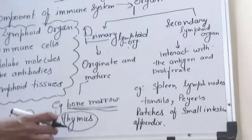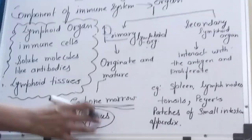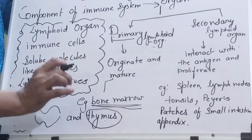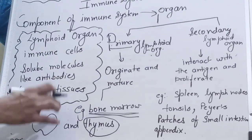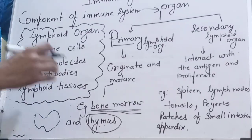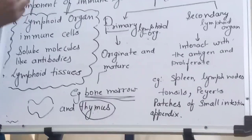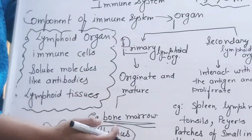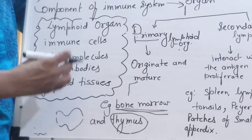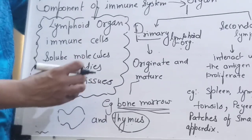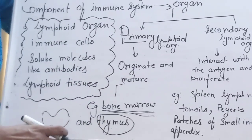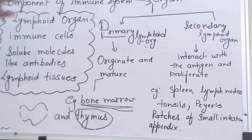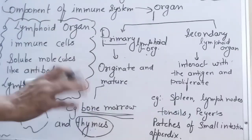In old age, the thymus becomes more weakened. That is why we say an old person has a weakened immune response. Right now with COVID-19, we said that old persons are more prone to this disease. Why? Because their immune system is going to reduce. The thymus is also very weak, reducing production of antibodies — so that person has a weak immune system.